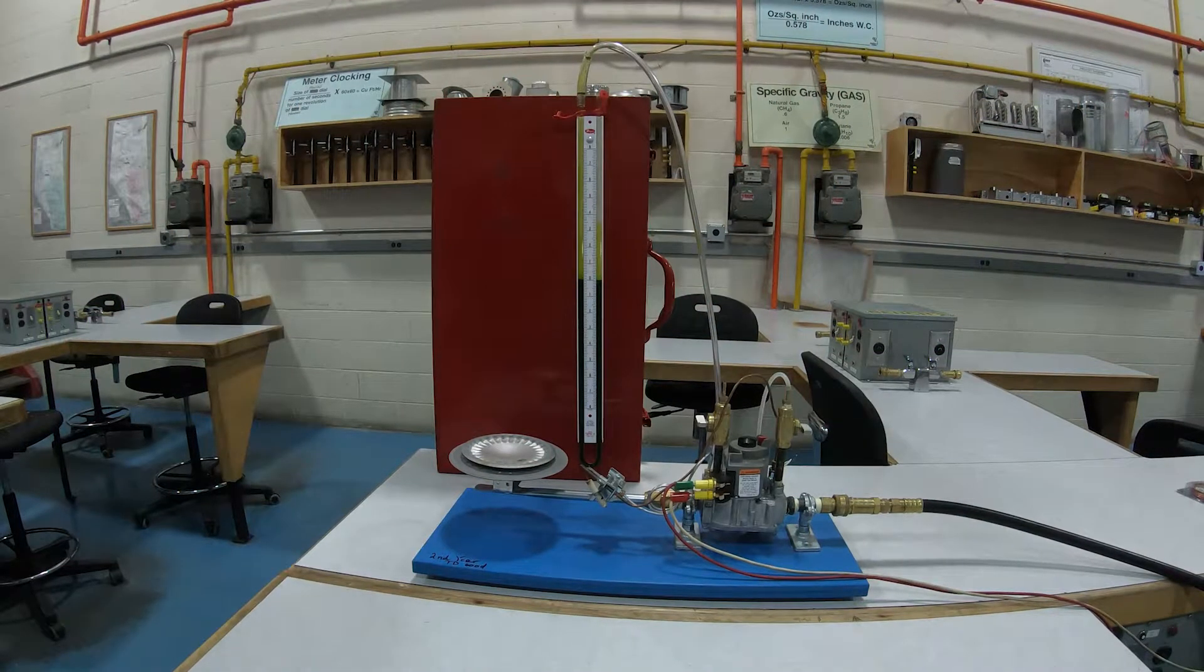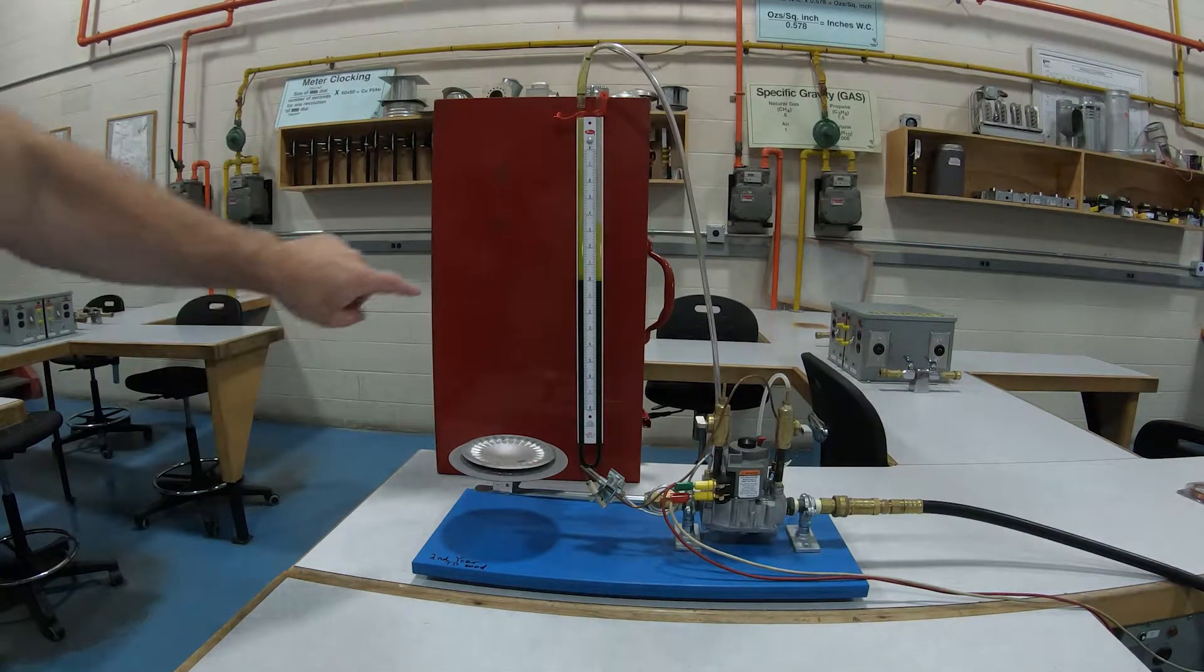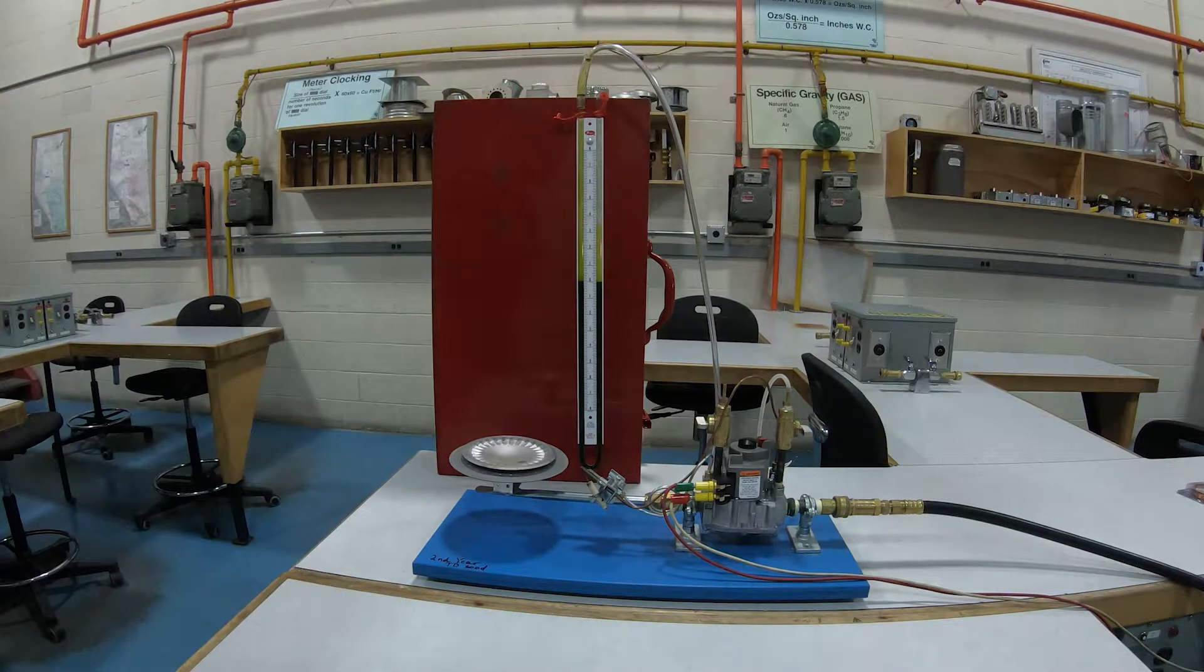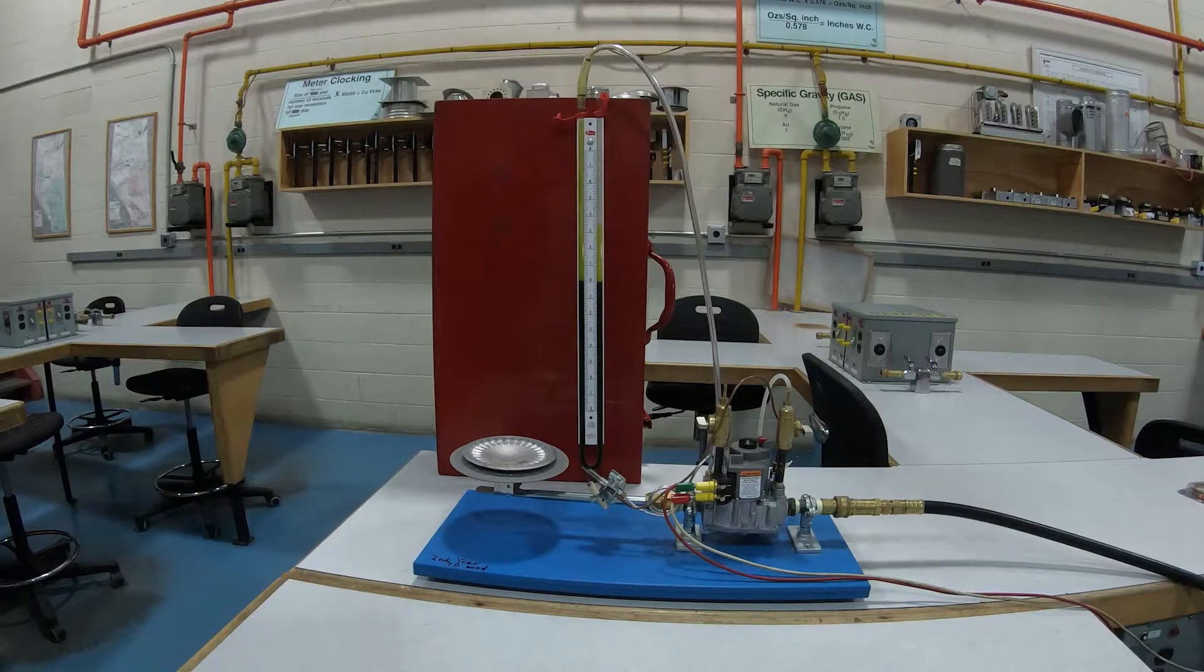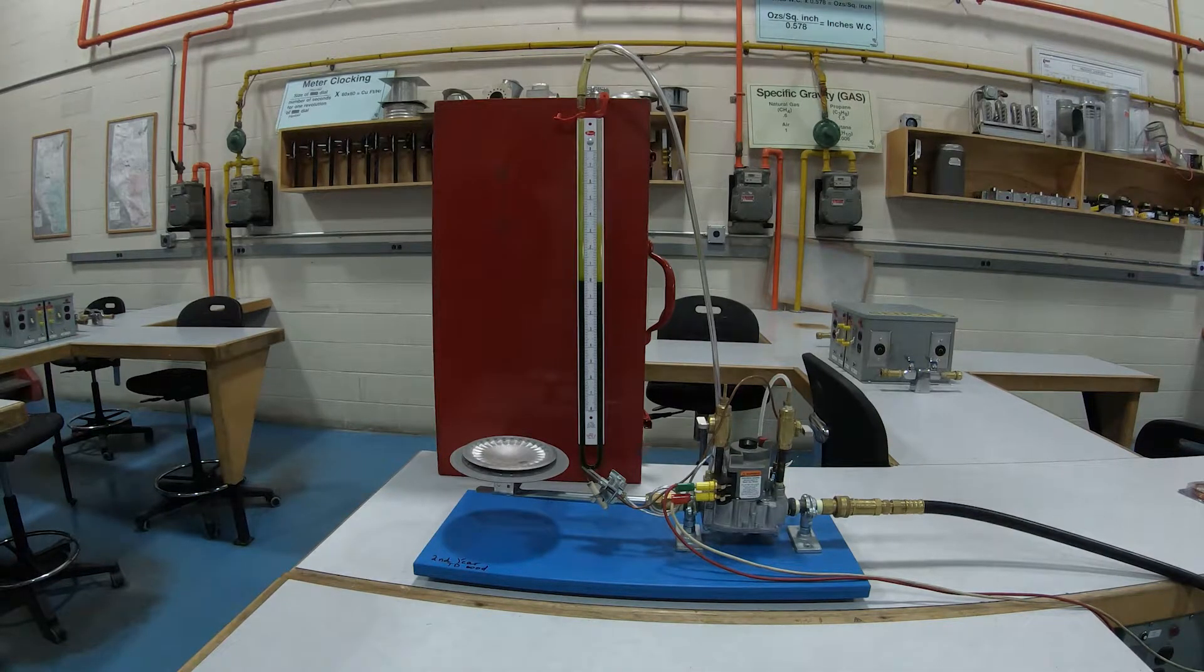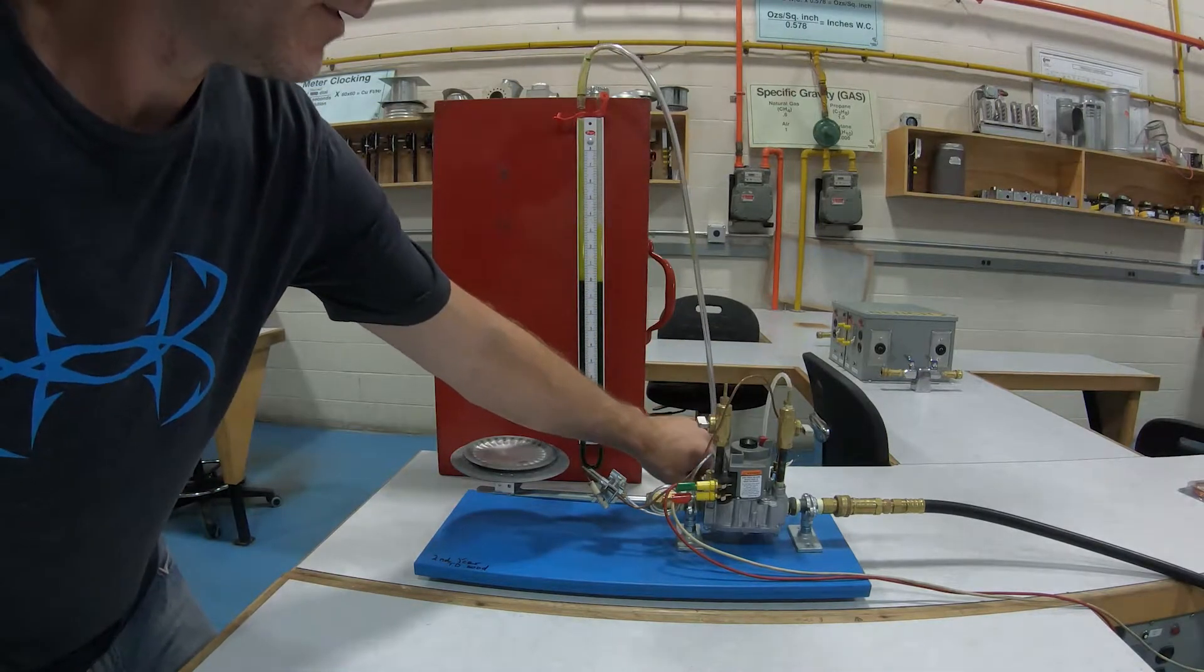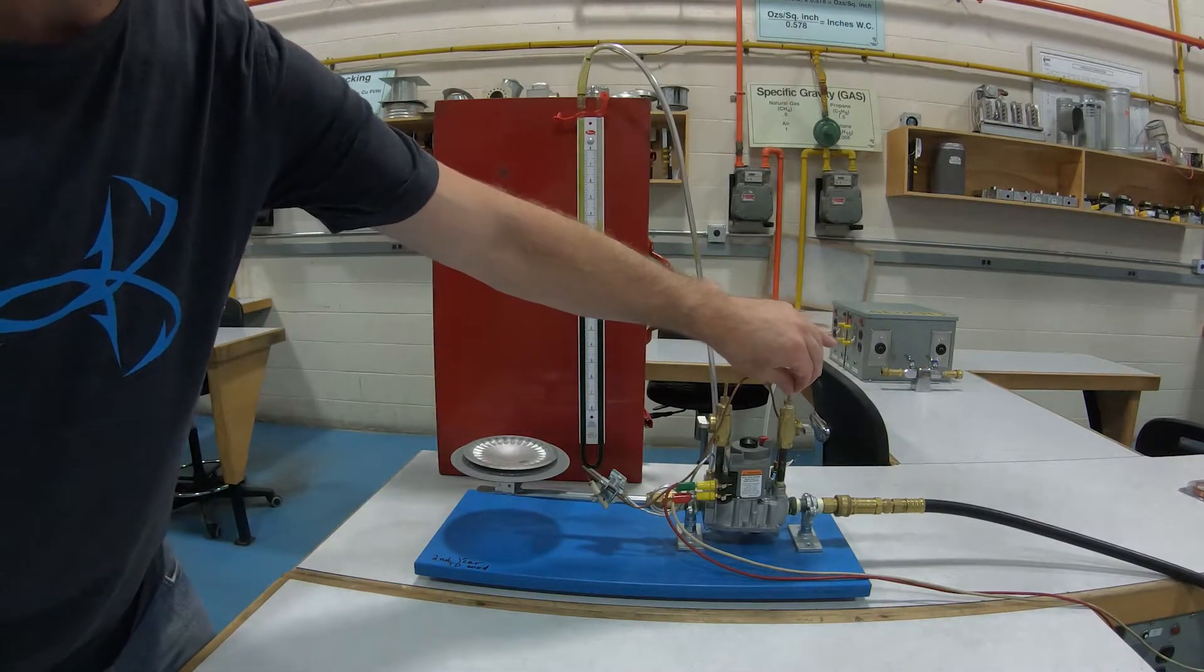All right folks, what we are looking at here is a water tube manometer. The reason why it's green inside there is because it has dye in it, but it is in fact just green dyed water. We have a tube coming off one side that goes all the way over and connects onto this test port here.